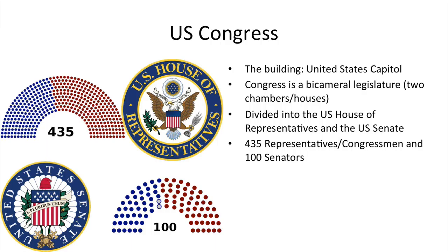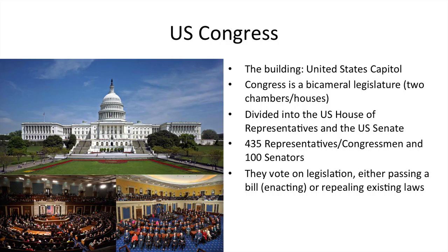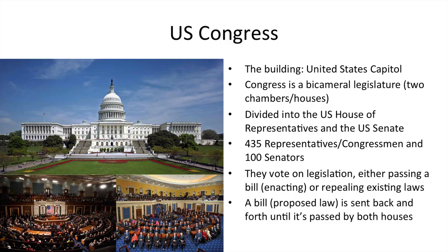There are always two senators for each state, which is why it's exactly 100 senators, while representatives — called congressmen — represent congressional districts, of which there are many. These lawmakers vote on legislation, either passing a bill (called enacting it) or repealing existing laws. A bill, which is a proposed law, is sent back and forth between the two chambers until it's passed by both houses.